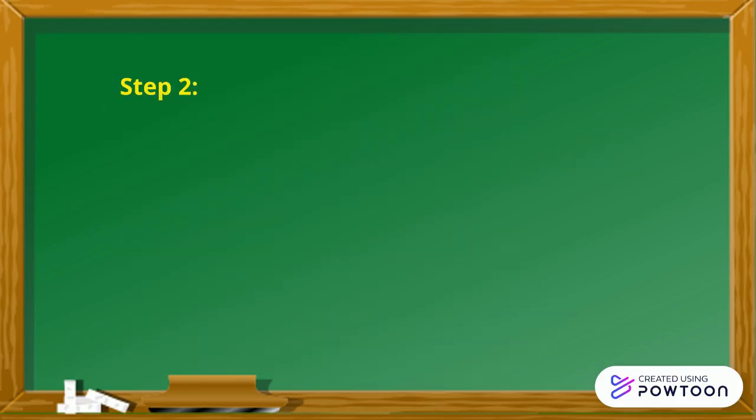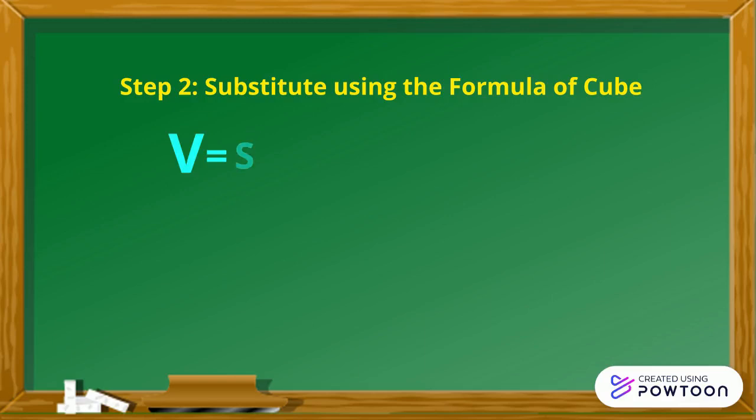Step 2: We substitute using the formula of the cube. Our formula is, volume is equal to side times side times side, or side to the third power.